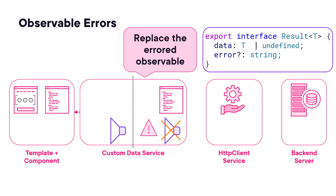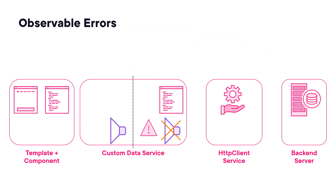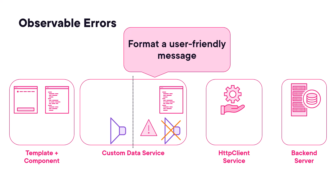One option is to wrap the data into a structure that includes the data and a potential error message. The component then unwraps the result to access the data and any error. If there is no good default for the Replacement Observable to emit, we could instead format a user-friendly error message. The Replacement Observable could then emit a new error with the formatted error message.